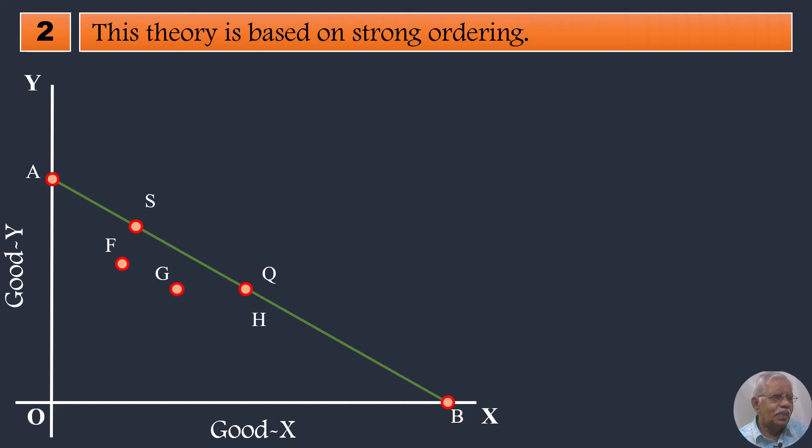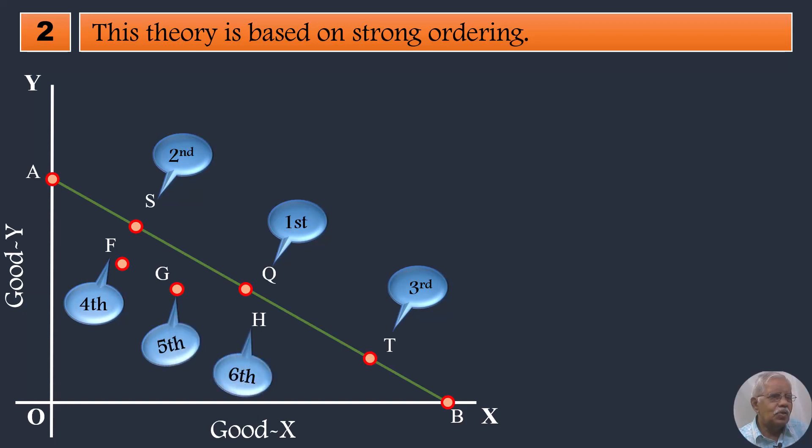2. This theory is based on strong ordering. Consumer is capable of ranking all the available combinations according to his preference. He has a scale of preference and assigns a definite rank to available combinations as 1st, 2nd, 3rd and so on. This enables the consumer to make a choice with ease. Moreover, this assumption doesn't give any room for indifference on the part of the consumer while making a choice.